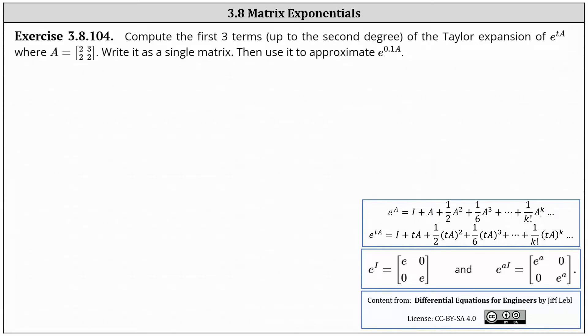We want to compute the first three terms up to the second degree of the Taylor expansion of e to the power of TA, where A is the two by two matrix with entries 2, 3, 2, 2. We're asked to write the result as a single matrix and then use it to approximate e to the power of 0.1A.